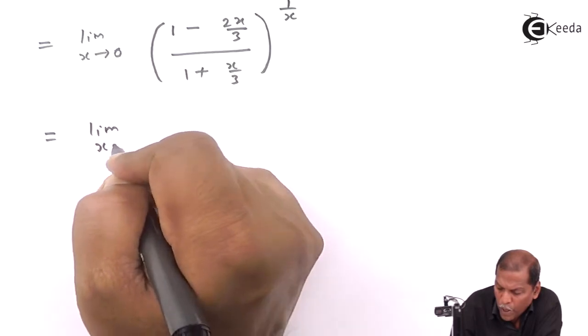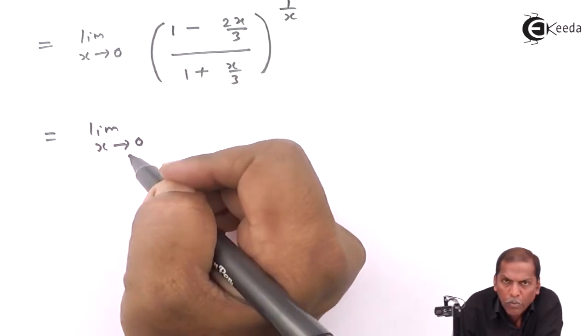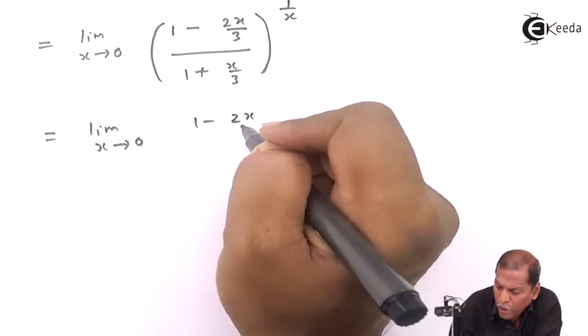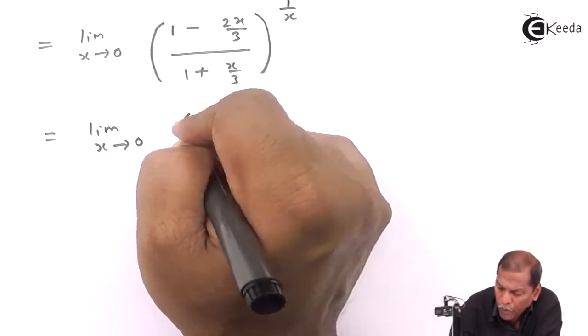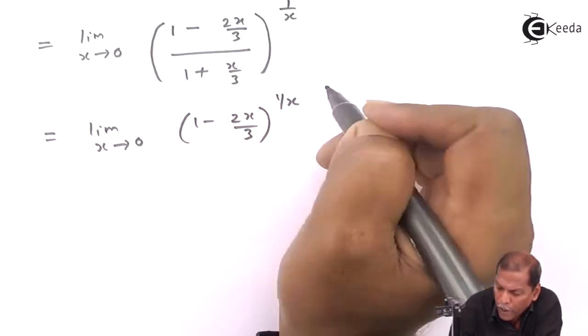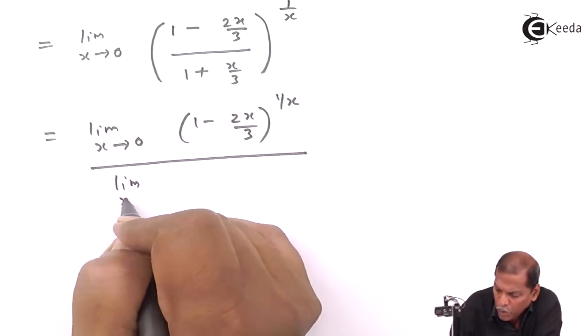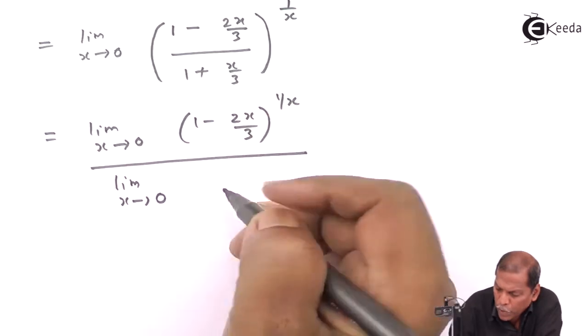Now by using indices law, this can be written as limit x tends to 0, (1 minus 2x upon 3)